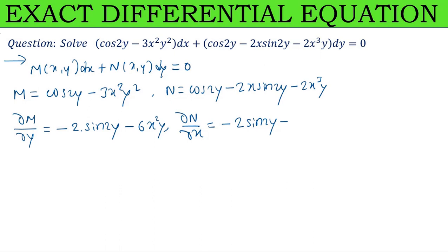Third term -2x³y: 2 and y are constants, x³ gives 3x², so -6x²y. Both ∂M/∂y and ∂N/∂x give the same result, so it is exact.